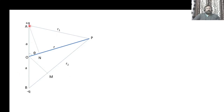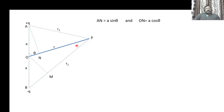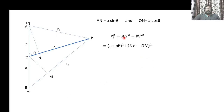To find R1 and R2, I draw a perpendicular from A to point N, forming right-angle triangle ANP. From that triangle, AN equals A sin theta and ON equals A cos theta. Applying Pythagoras theorem in right-angle triangle ANP: R1 squared equals AN squared plus NP squared. Expanding NP as OP minus ON, we get R1 squared equals A sin theta squared plus R squared plus A cos theta squared minus 2R times A cos theta. Applying trigonometric identities and simplifying, we obtain R1 squared equal to A squared plus R squared minus 2RA cos theta.